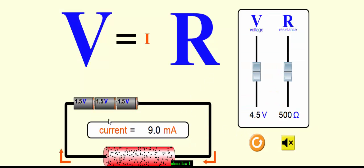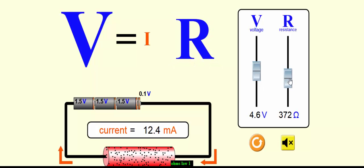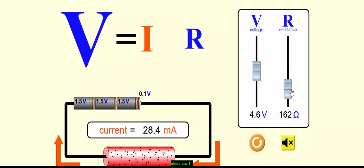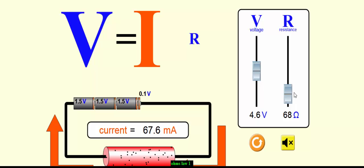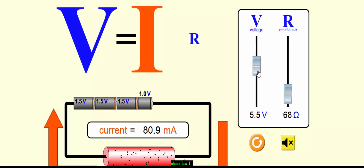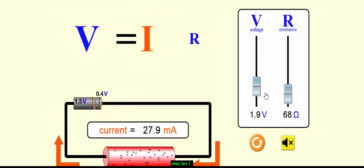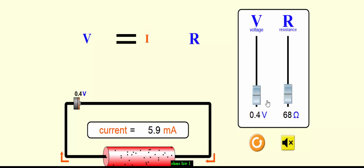This is our simple circuit. Here we are having a voltage source and R. I can change the voltage and R value by varying this knob. Now I am keeping R value as constant. By Ohm's Law, when I increase the V value — when I increase the applied voltage — the current will increase. We can see that now the voltage is 0.4 and the current is 5.9 milliampere.